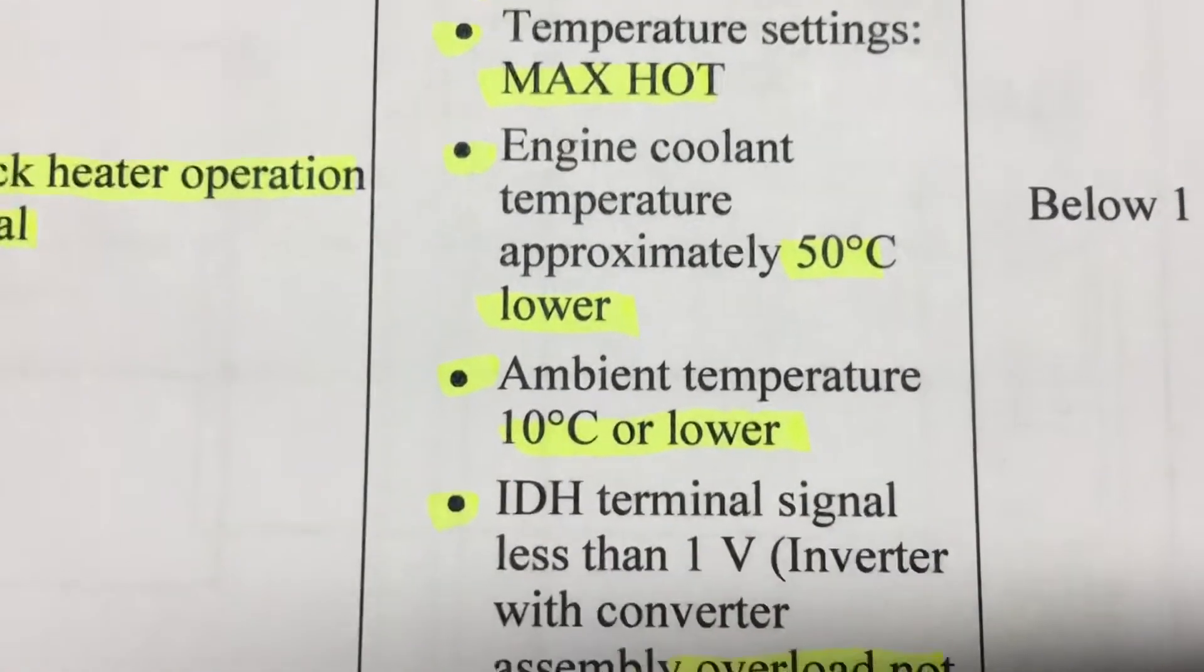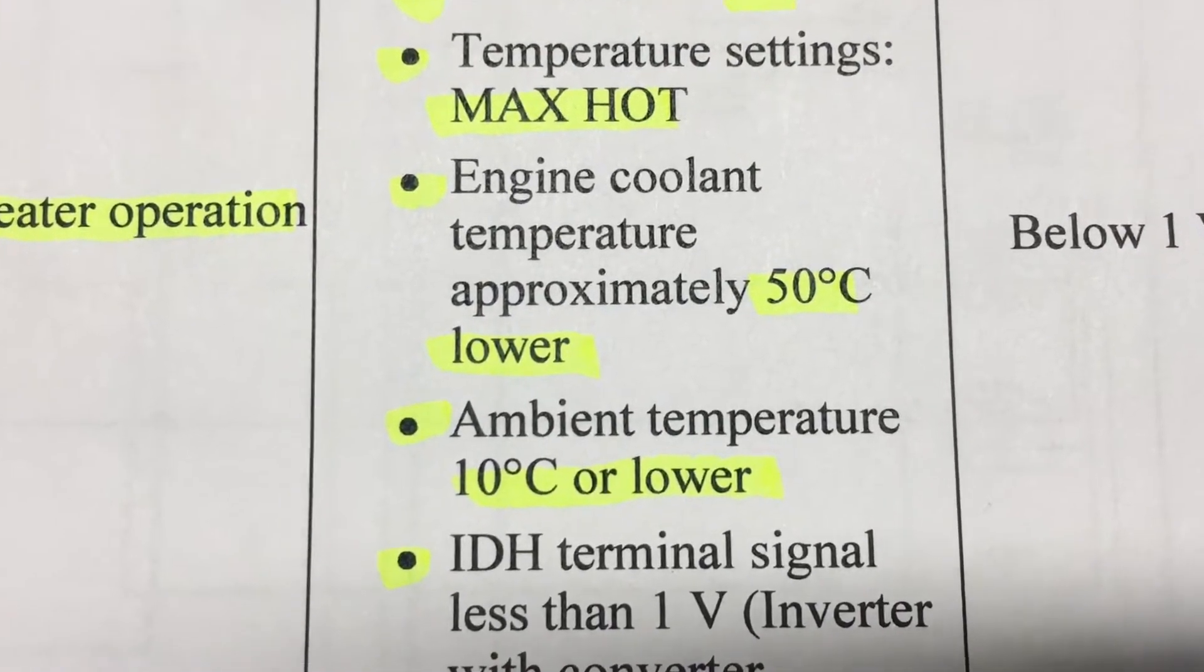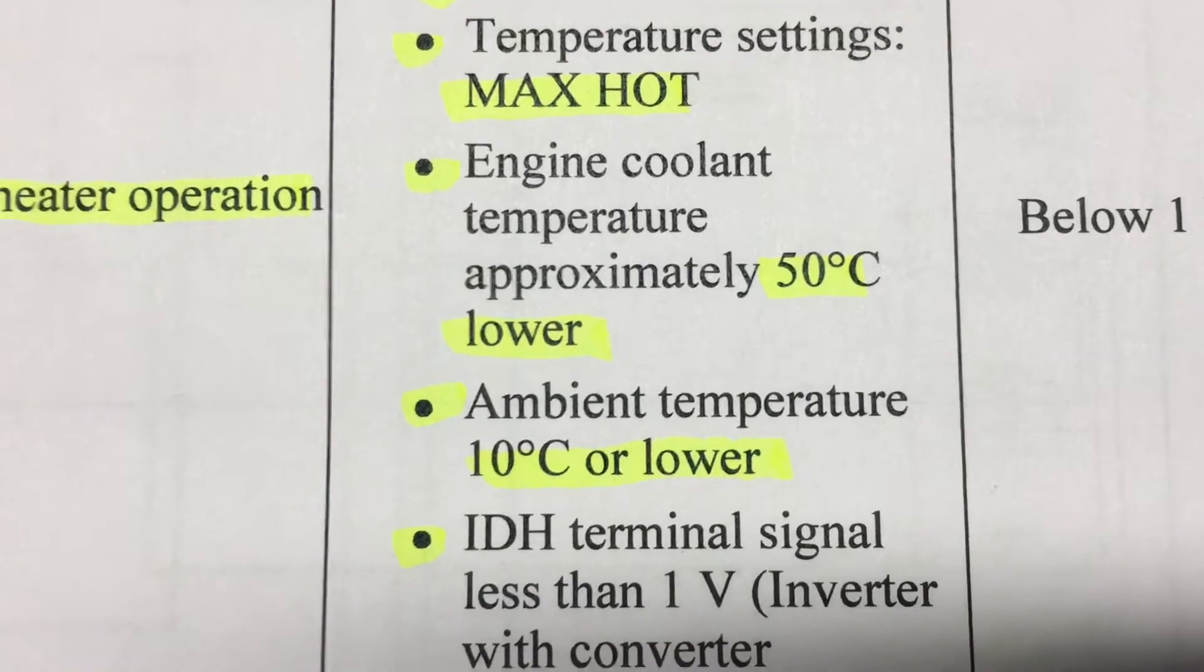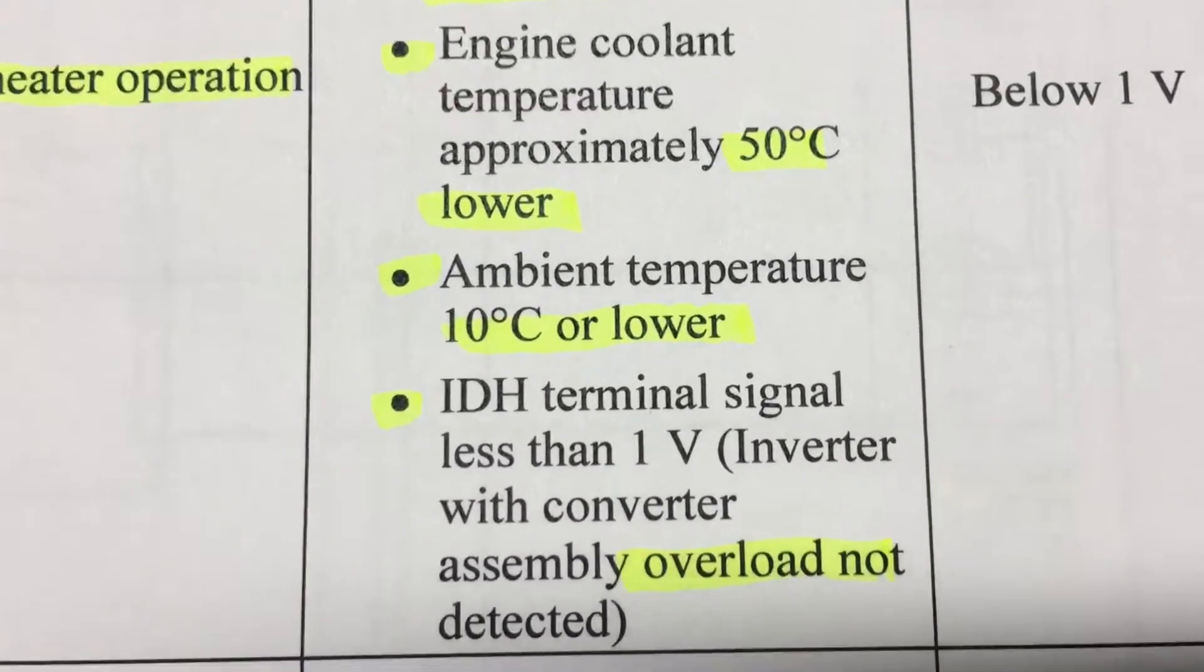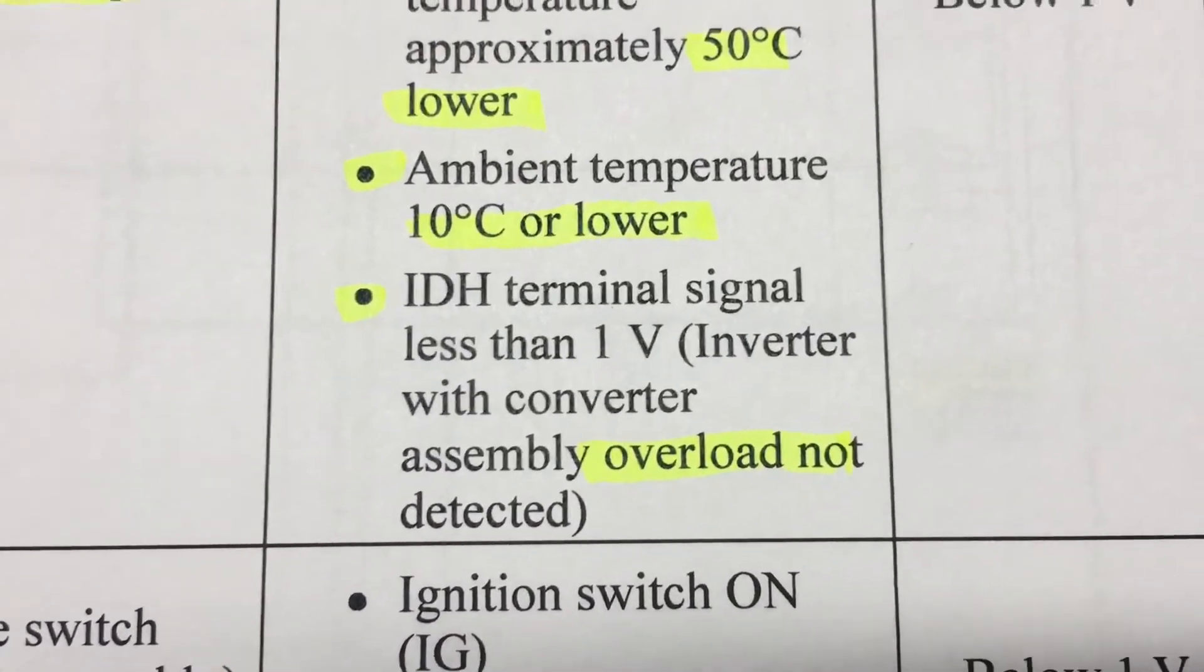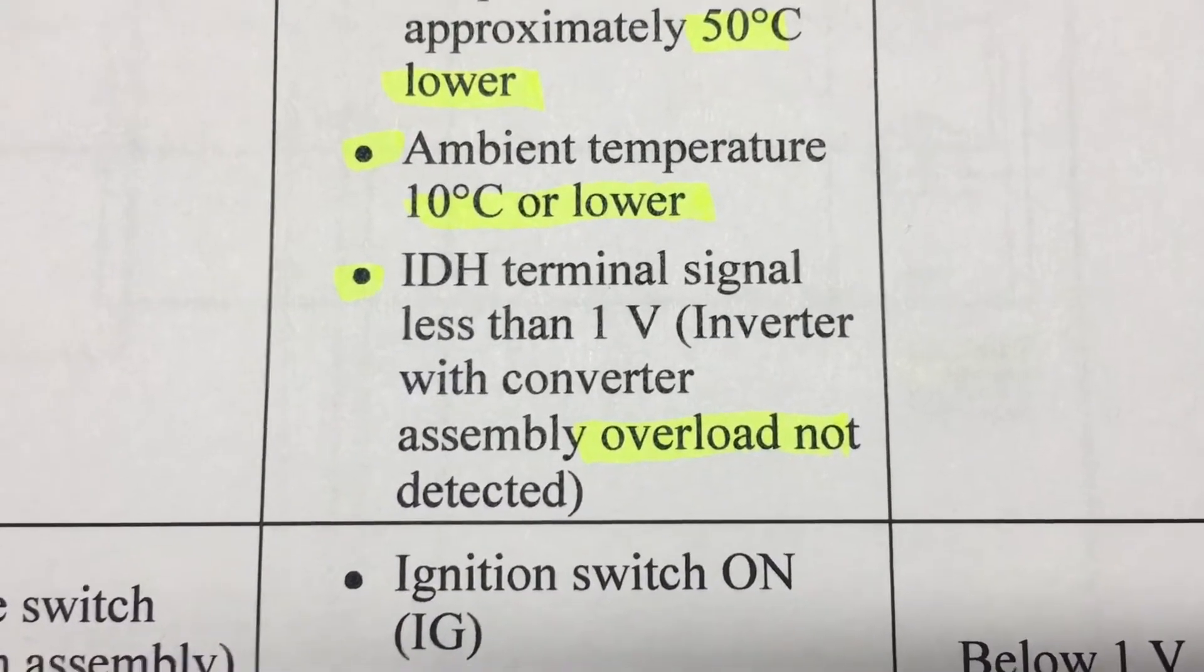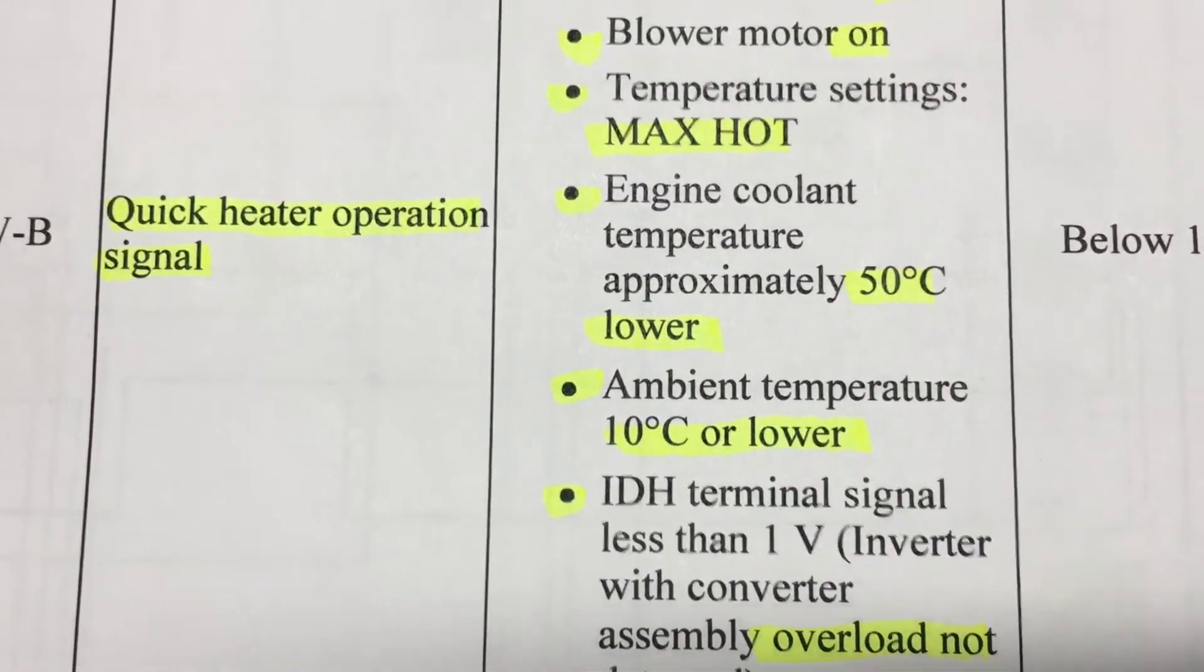Engine temperature is below 50 degrees C - obviously if the engine coolant is up to temperature the standard heater matrix probably provides adequate heating. Ambient temperature is lower than 10 degrees, which makes sense from a logic standpoint, and you're not overloading the inverter converter because it draws quite a bit of current.